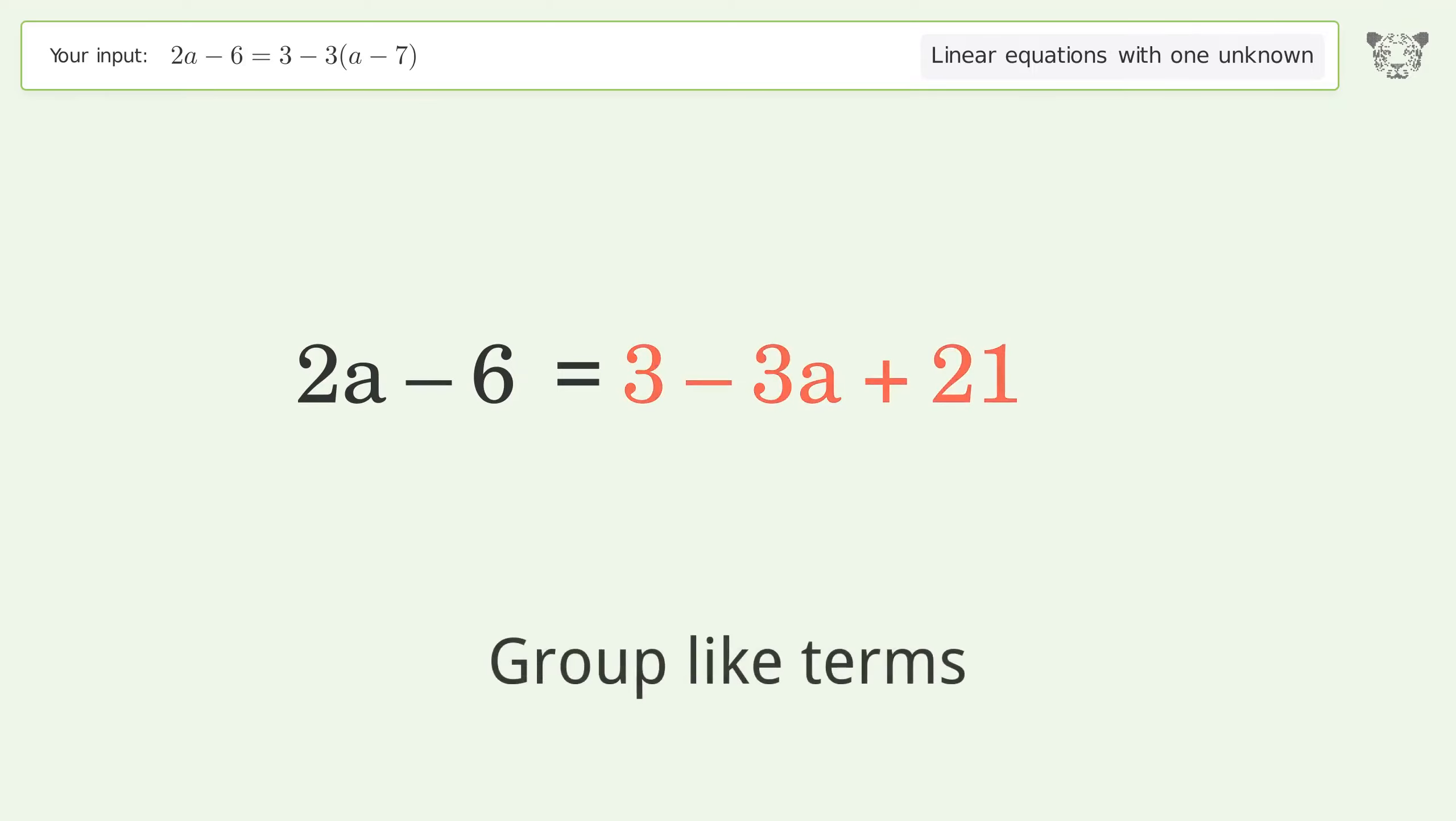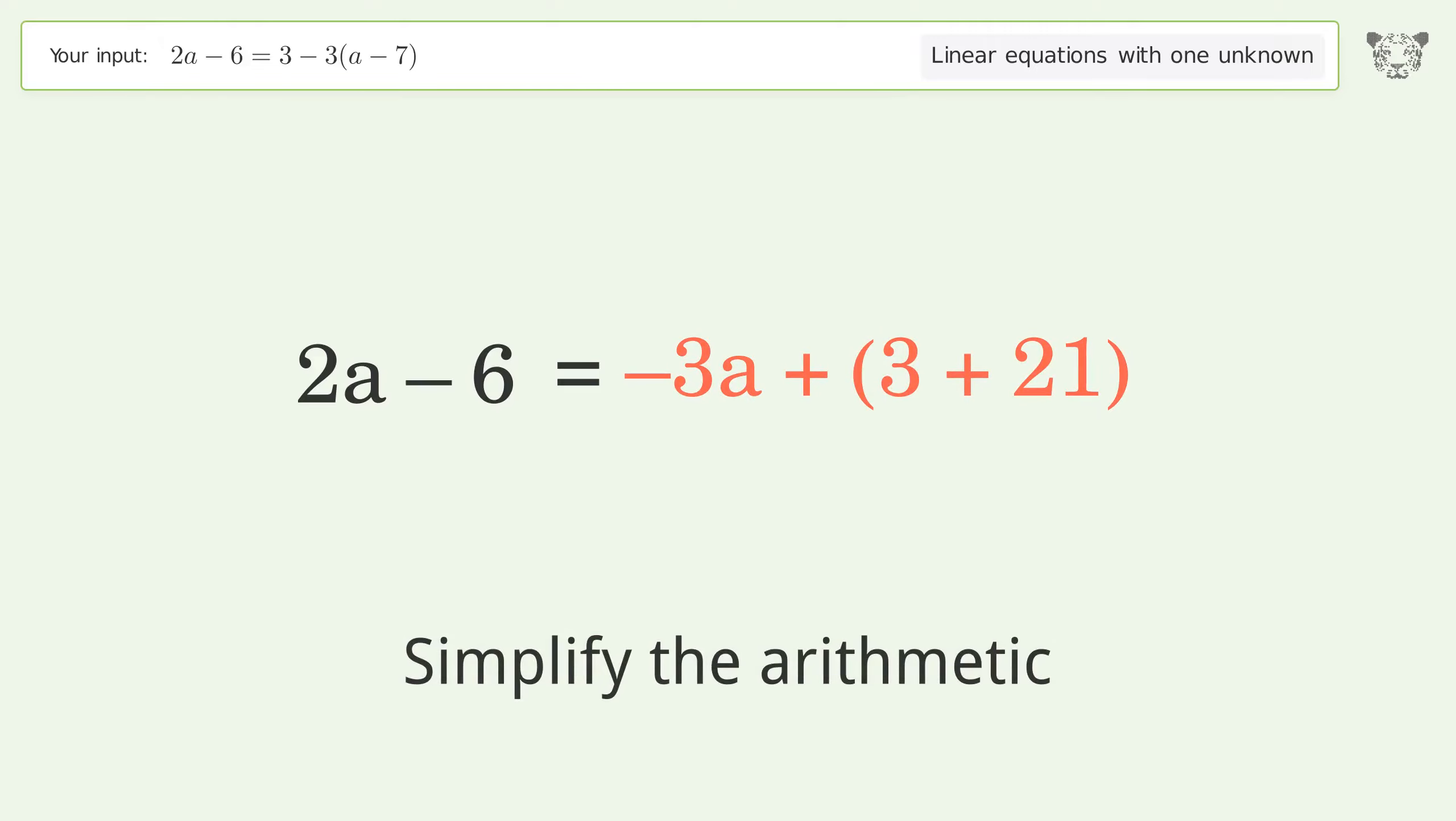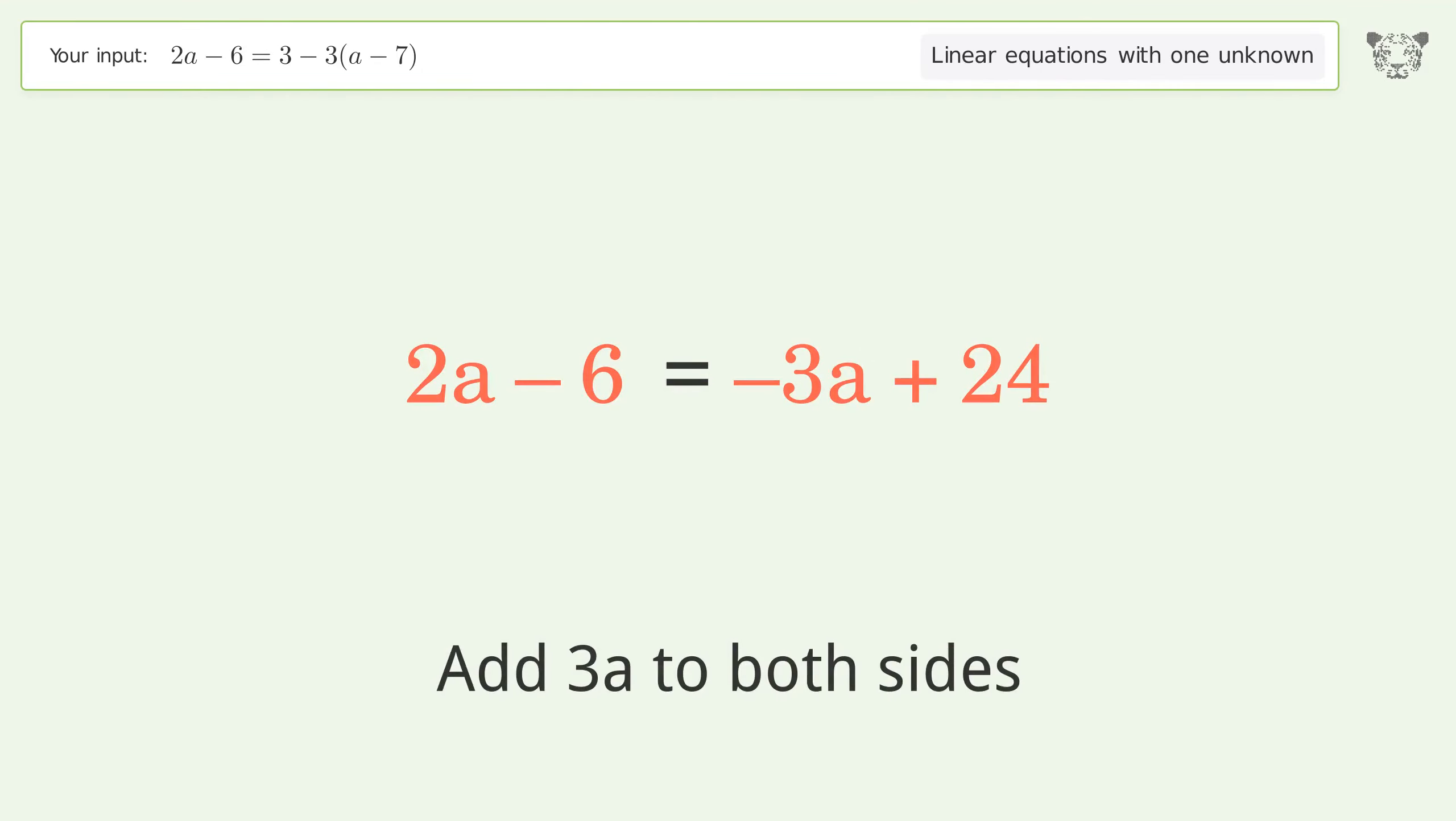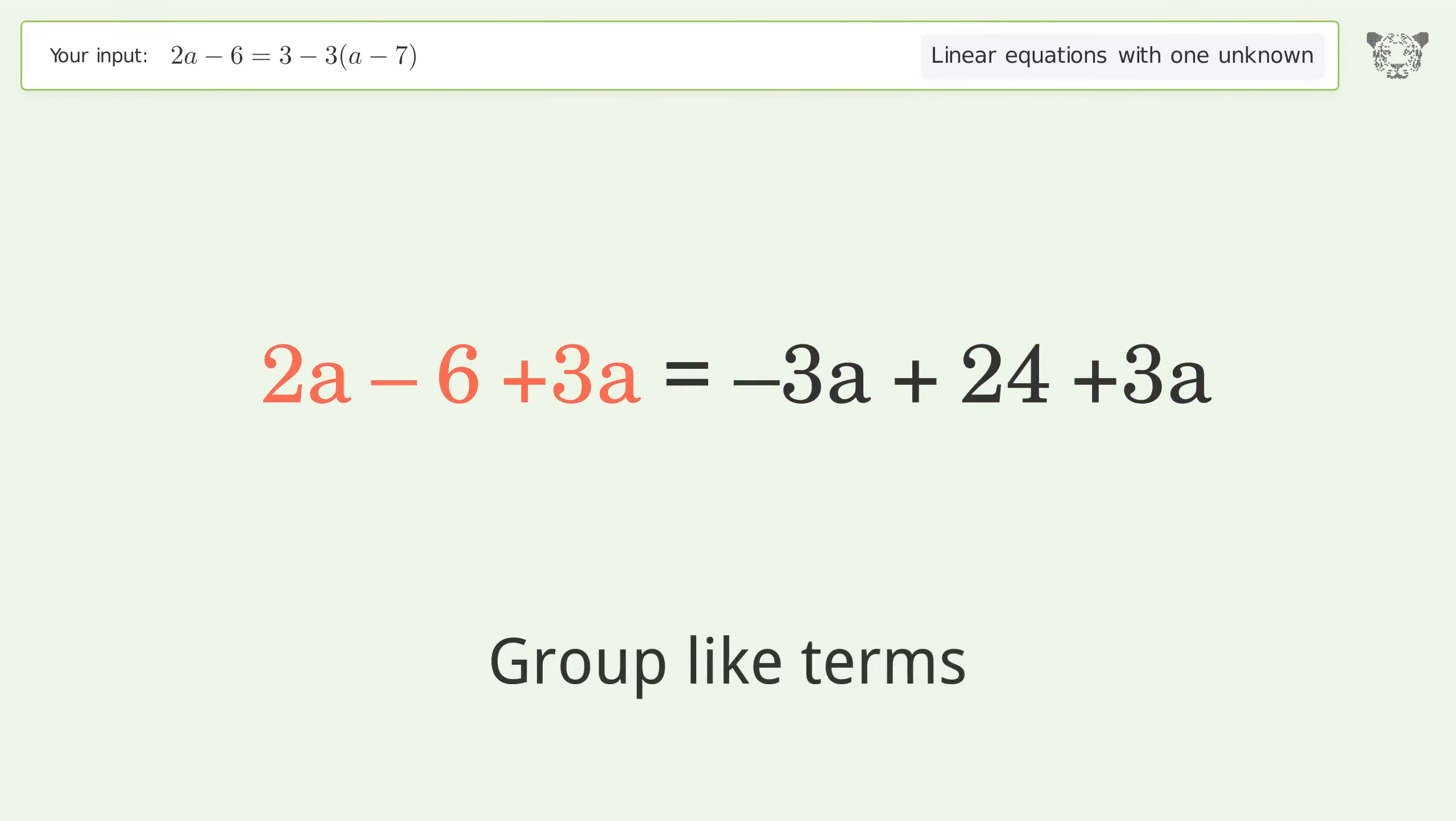Group like terms. Simplify the arithmetic. Group all a terms on the left side of the equation. Add 3a to both sides. Group like terms.